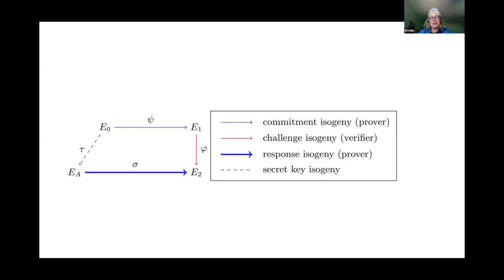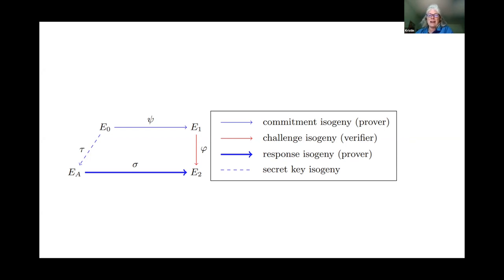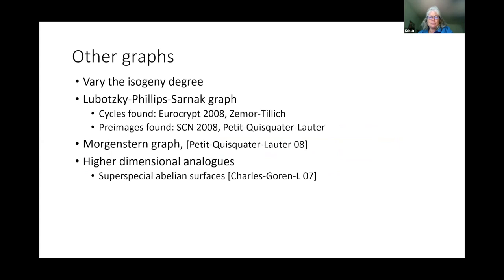The three lectures covered, from a cryptographic viewpoint: hash functions, key exchange, and signatures — all based on the hardness of path-finding. Mathematically, we discussed the description of supersingular isogeny graphs, their properties as Ramanujan expander graphs, and their description as quaternion graphs including the hardness of translating between those two descriptions. I'll add a slide with additional references for quaternion algebras in English before sending out the slides today.